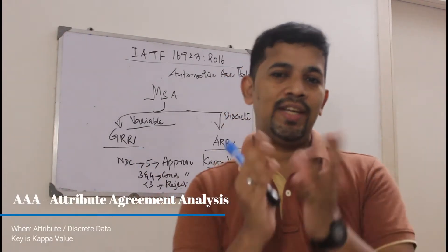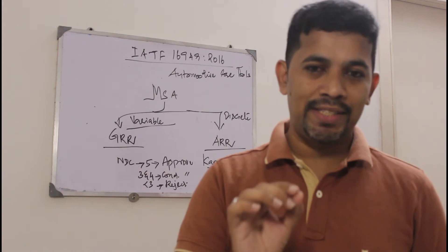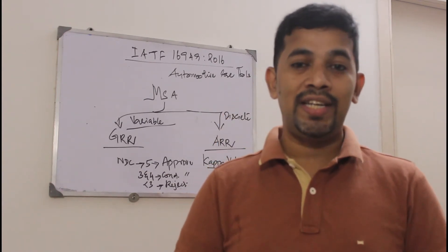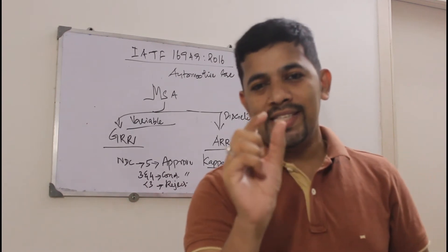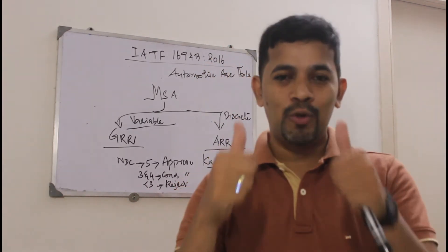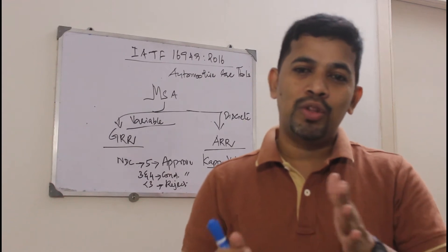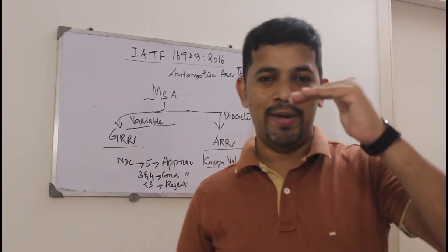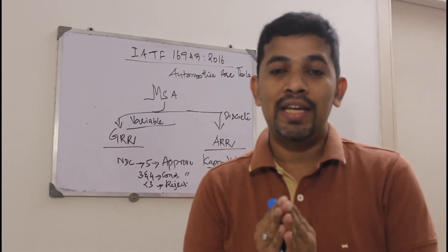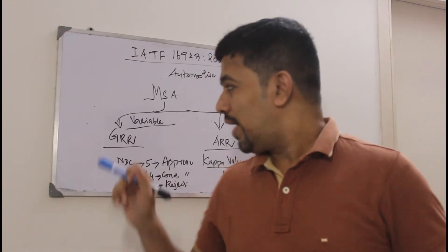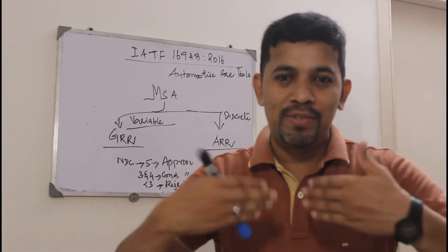The heart of GRR is NDC — Number of Distinct Categories. That number gives you the complete story. If the NDC value is 5 or greater than 5, that means you can approve — the variability is less than 10%. The two perspectives in GRR are repeatability — how many times we are repeating the measurement — and reproducibility.